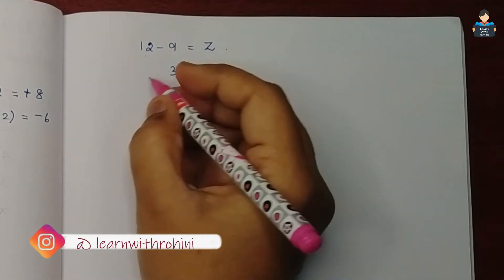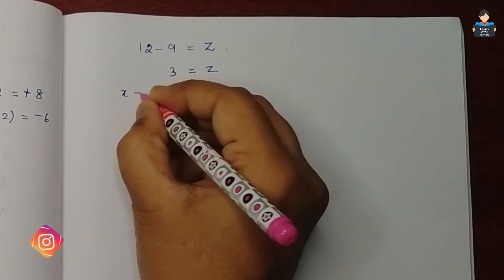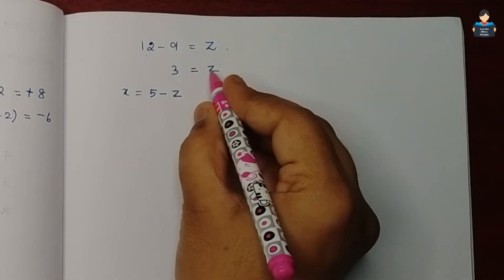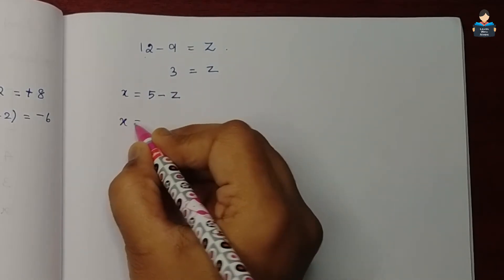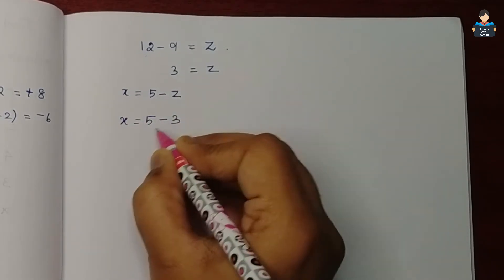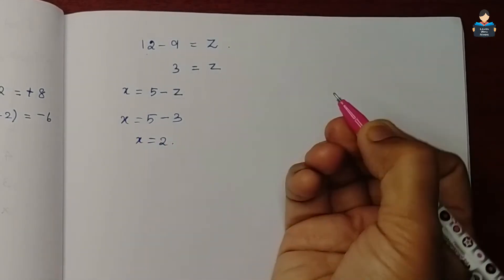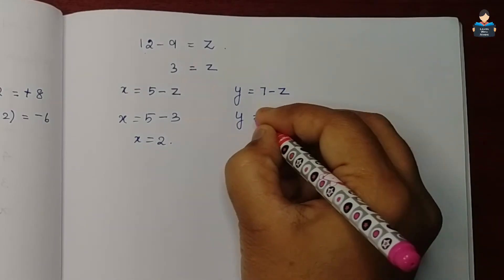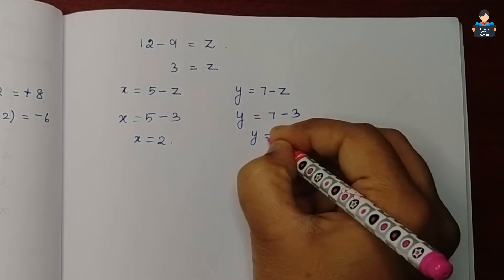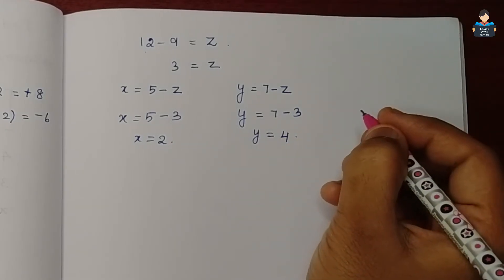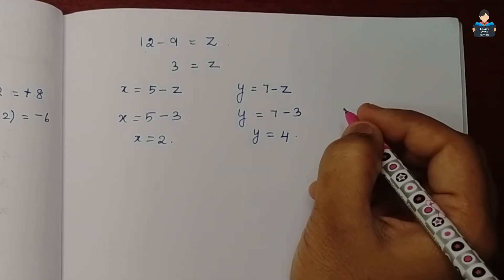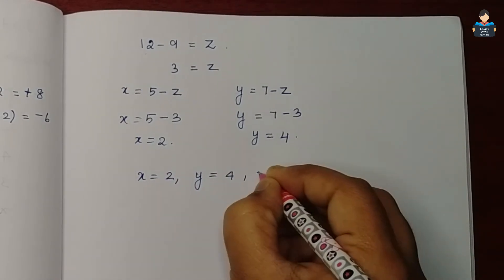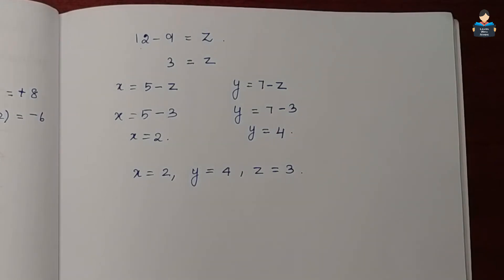Now substituting z equals 3 to find x and y: x equals 5 minus z equals 5 minus 3, so x equals 2. And y equals 7 minus z equals 7 minus 3, so y equals 4. Therefore x equals 2, y equals 4, and z equals 3.